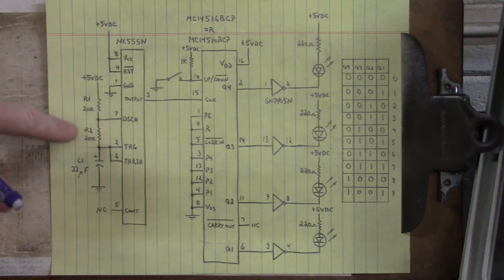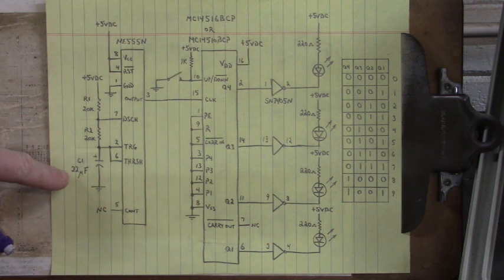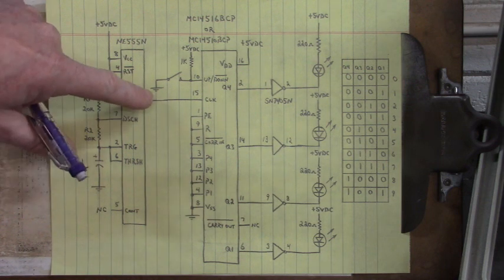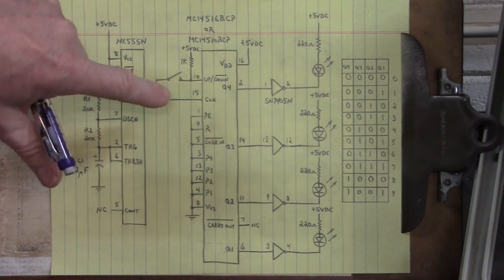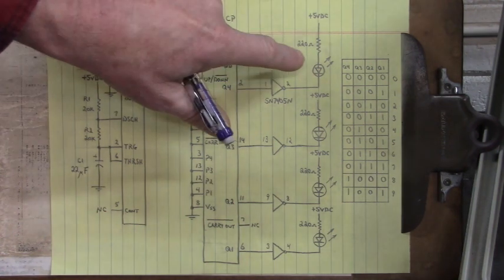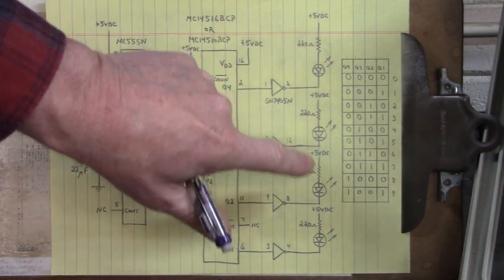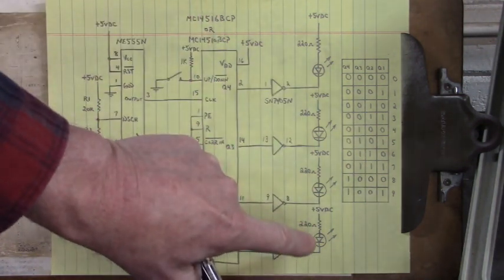R1 and R2 are 20 kilohms and C1 is 22 microfarads and that generates a square wave output on pin 3 of a hair over 1 hertz. Now we want a slow frequency so that we can see the state changes on the LEDs.